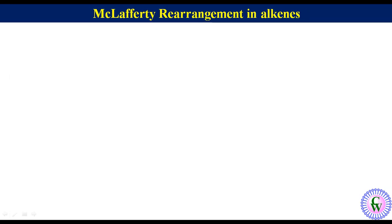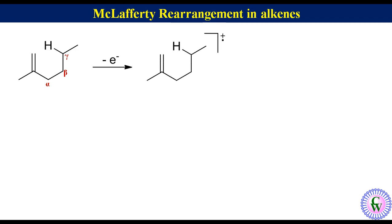McLafferty rearrangement in alkenes. Alkenes with gamma hydrogen also undergo McLafferty rearrangement. For example, 2-methylhexene — it has gamma hydrogen. Removal of one electron from it will give a radical cation which after McLafferty fragmentation will give the McLafferty fragment as a radical cation and a propene molecule. The m/z value of this radical cation will be 56.